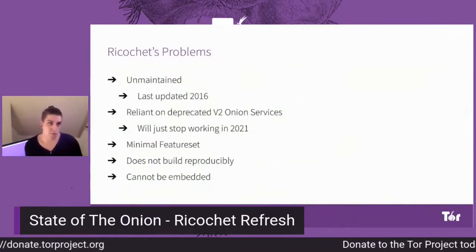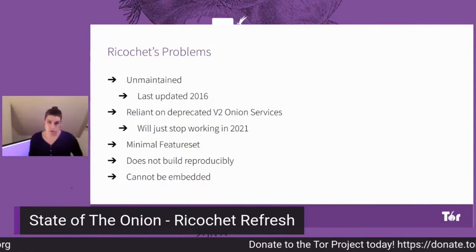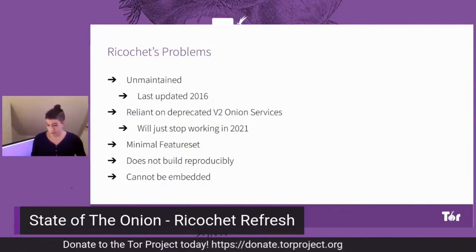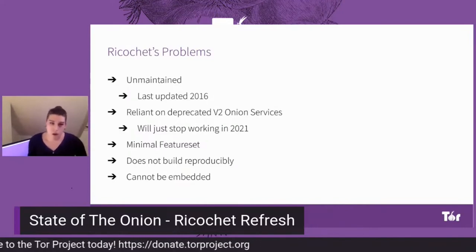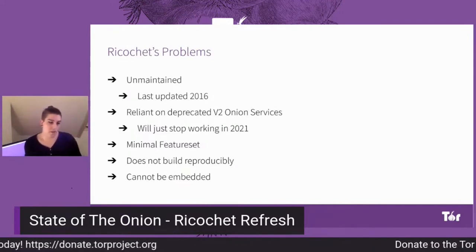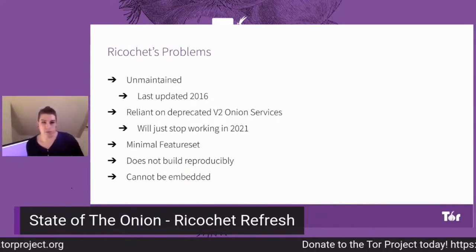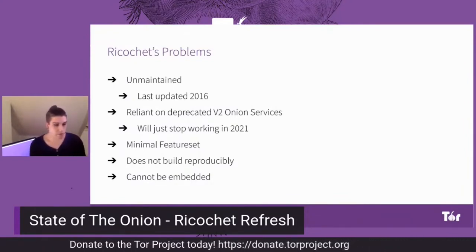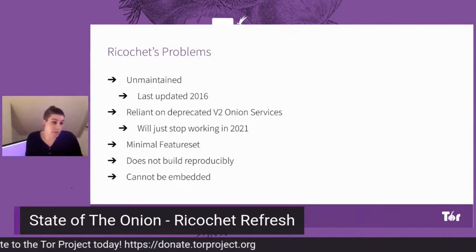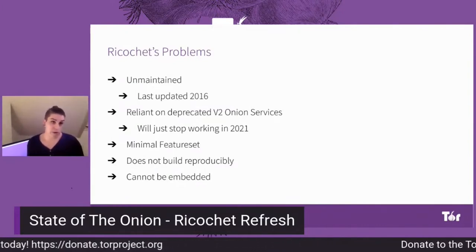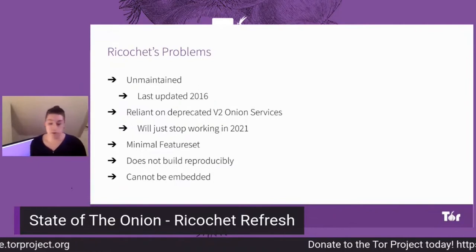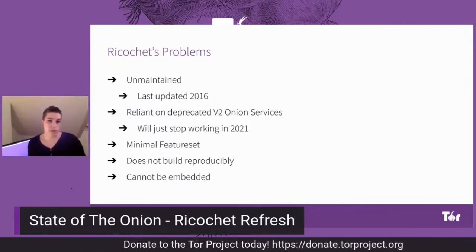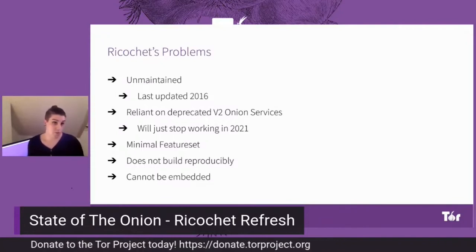But Ricochet has some problems. First of all, it's very unmaintained — the last update was from November 2016. It's reliant on the now deprecated V2 onion services, which others have already talked about previously. This basically means that Ricochet will stop working sometime in 2021 once V2 is phased out and none of the Tor relays on the network understand V2 anymore.